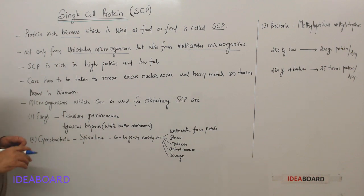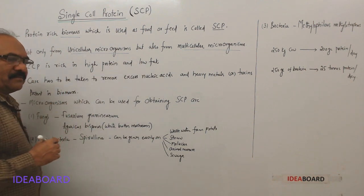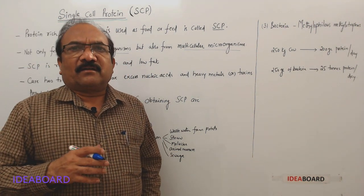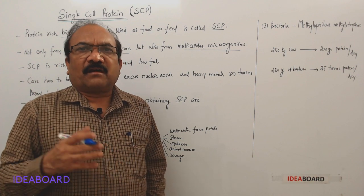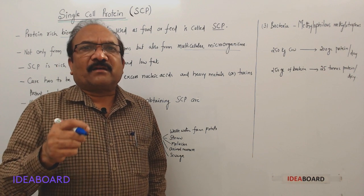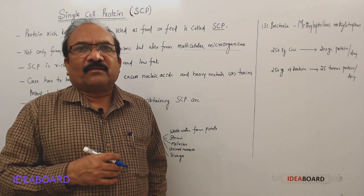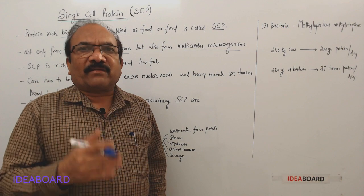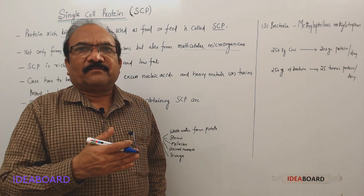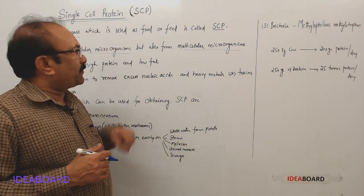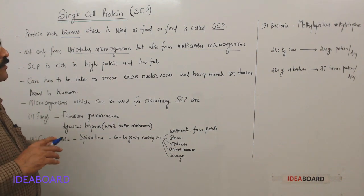And this SCP is rich in high protein and low fat. Nowadays people are suffering with diabetes and high blood pressure, and it is all due to presence of higher amount of fats in their food. So the doctors are recommending to take less amount of fats. If one takes this SCP, they will get low fat from this SCP.